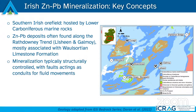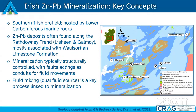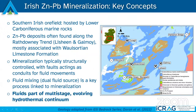Mineralization in deposits in the southern Irish ore field including Lachine are typically structurally controlled, with faults acting as conduits for fluid movement and facilitating fluid mixing. We have a dual fluid source in Ireland — mixing between two sources is a key process linked to mineralization. There is a really hot hydrothermal fluid hosting hydrothermal sulfur thought to be sourced from basement rocks, and a much cooler brine fluid full of bacteriogenically reduced sulfur with really low sulfur isotope signatures.